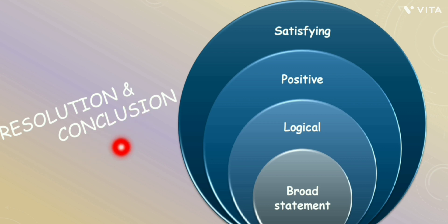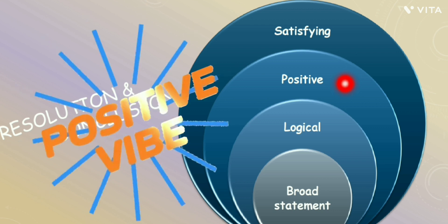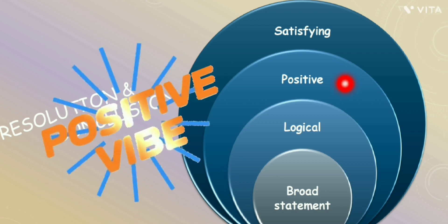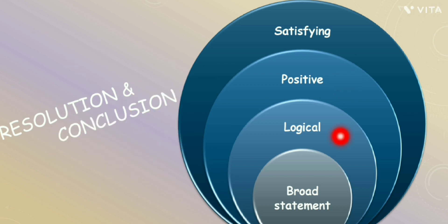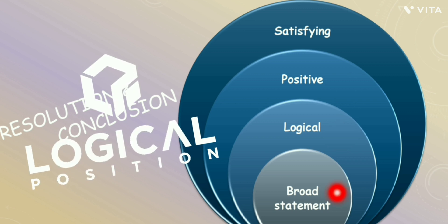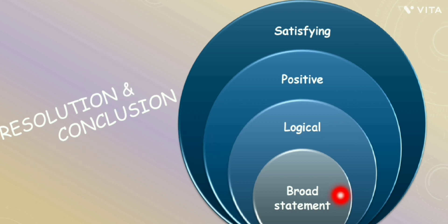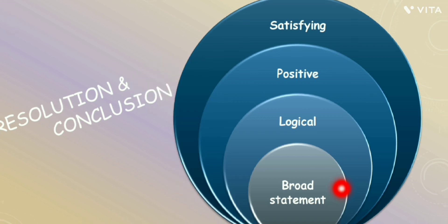Next is resolution and conclusion. The conclusion of the story should be satisfying — your readers must be satisfied with the ending. It should also be positive, because if a story ends on a negative note it is not considered a nice story. The conclusion should be logical, and you can also end with a broad statement or a question.